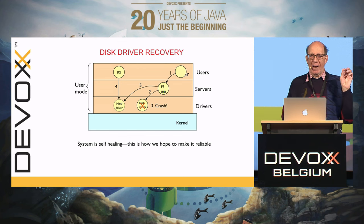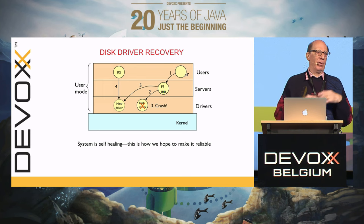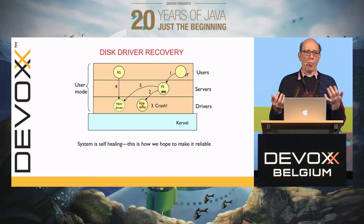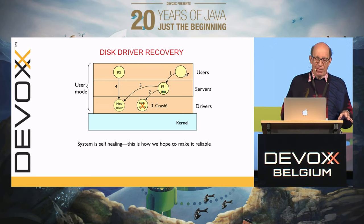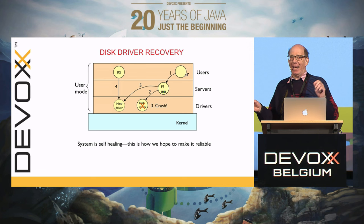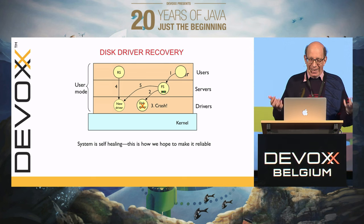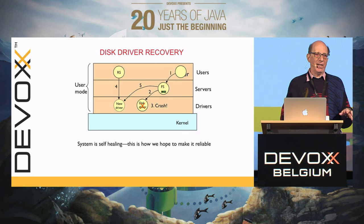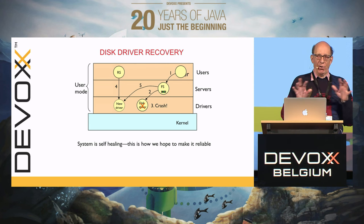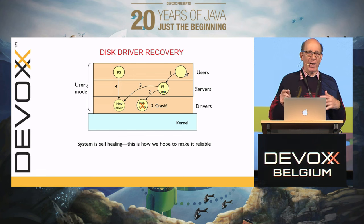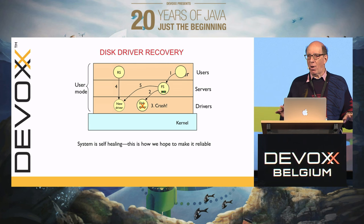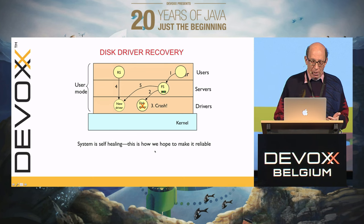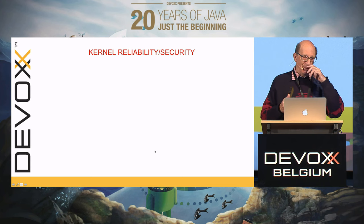If there's a systematic hard error in the code of the disk driver so it could never work, then we're toast. But most errors are transient — some weird timing condition, like a race. Try it again under different conditions and it works. The really hard errors where the code is totally wrong are found in testing. The errors that don't show up in testing are things that depend on very weird timing conditions. So most of the time, if you try it again, it works. In most cases, we can make the system self-healing by simply restarting the bad piece.